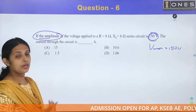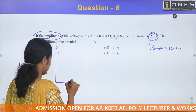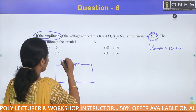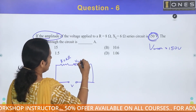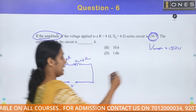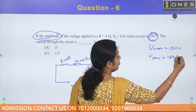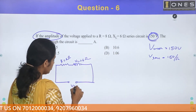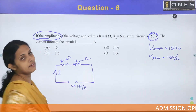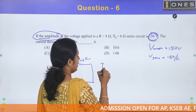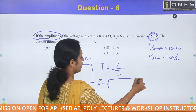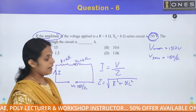We need to find the current through the circuit. The voltage source drives an RL series circuit. R is equal to 8 ohm and XL is equal to 6 ohm. The applied voltage is 150 V, so the RMS value is equal to 150 divided by root 2. To calculate the current value, I equals voltage divided by impedance. The impedance is the square root of R squared plus XL squared.